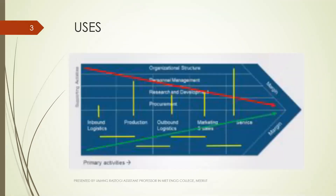In this diagram you can see two axes: the x-axis represents primary activities and the y-axis represents secondary activities. In this analysis, there are nine activities divided into two categories — primary activities and secondary activities.